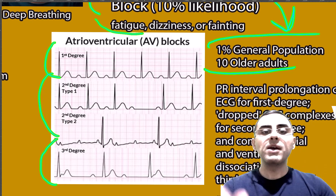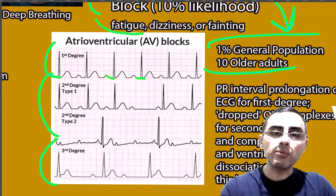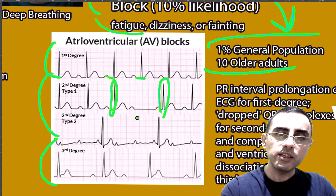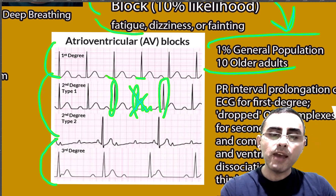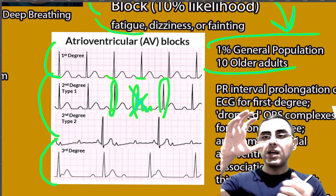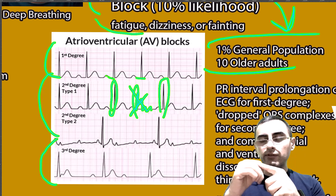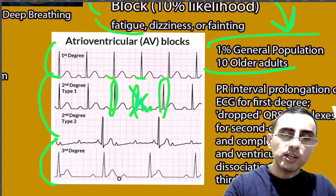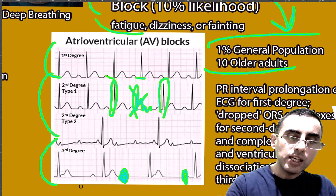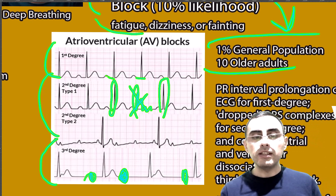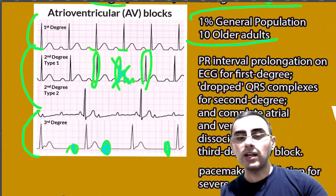In first degree AV block, there is just an increased PR interval. In second degree, there is a dropped QRS complex — no QRS complex appears. In third degree, there is complete dissociation between atria and ventricles: the atria contract independently from the ventricles, and the ventricles contract independently from the atria.